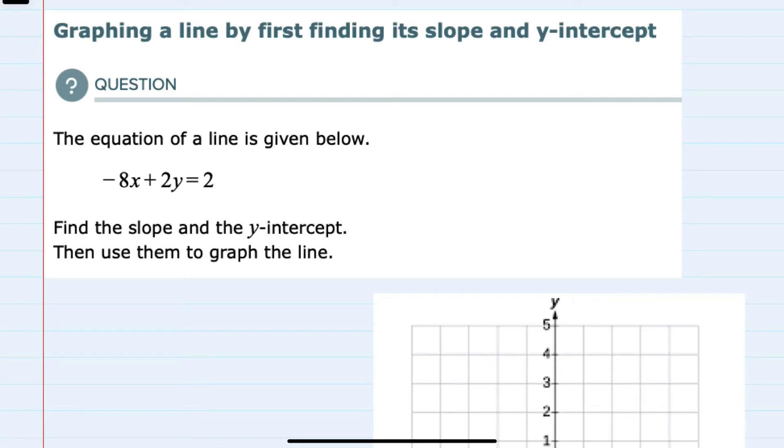In this video, I'll be helping you with the ALEKS problem type called graphing a line by first finding its slope and y-intercept. To find the slope and y-intercept, I'm going to put the equation in slope-intercept form, which is y = mx + b.